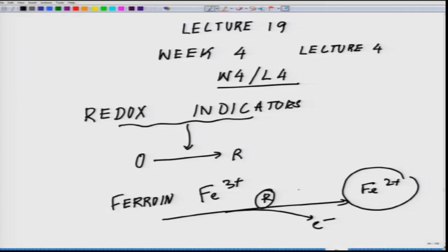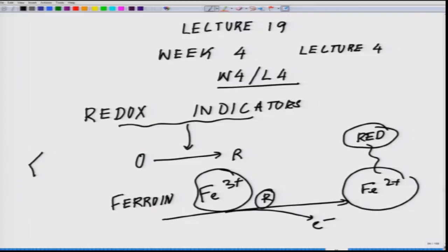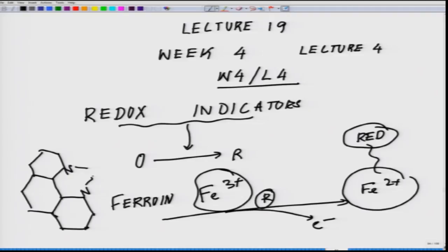In ferroin, iron which was in the Fe3+ state gains an electron and becomes Fe2+. Because of that reduction reaction, the compound is red in color, whereas Fe3+ was pale blue or almost colorless. The ferroin molecule has nitrogen atoms coordinating with the iron center.